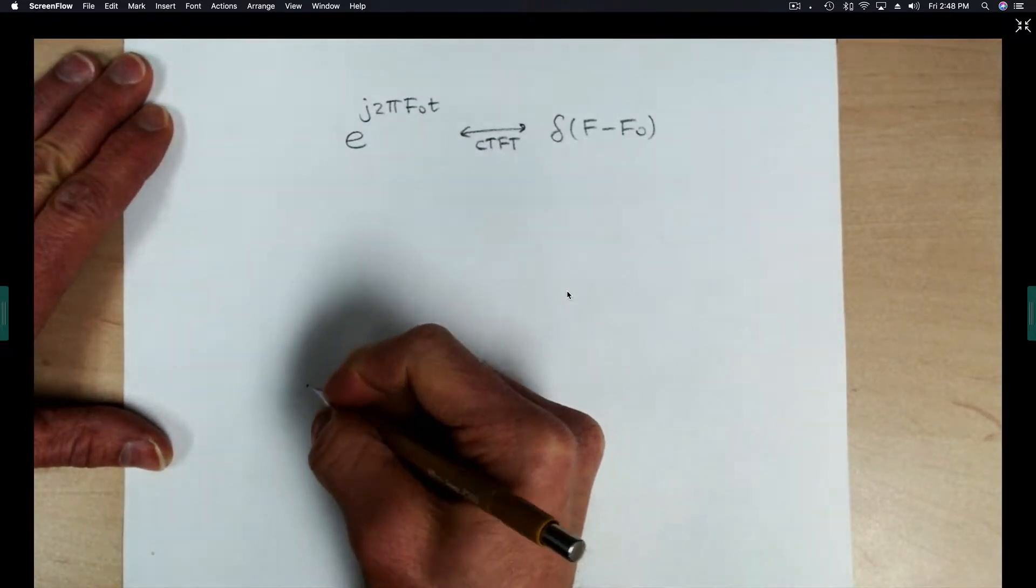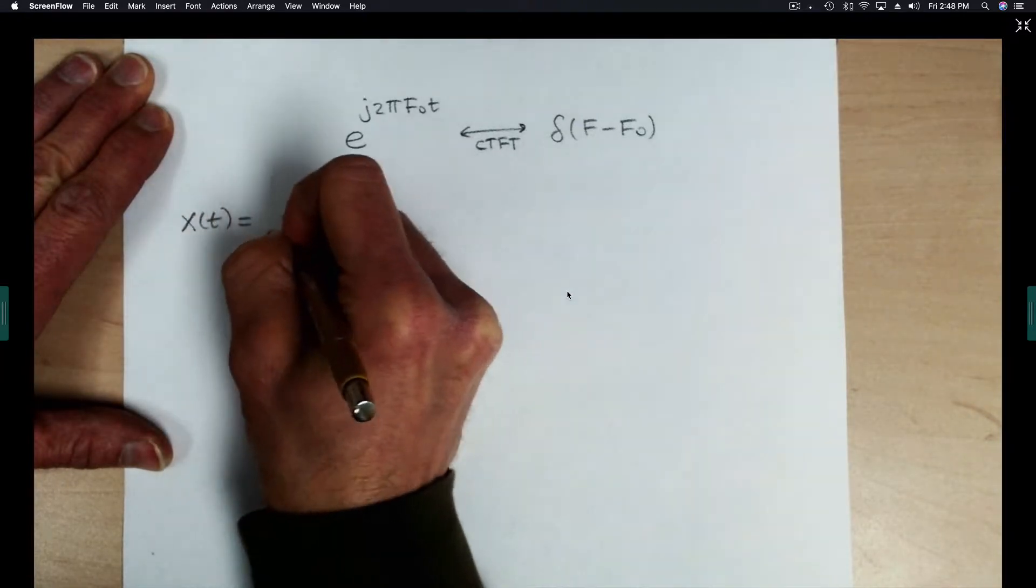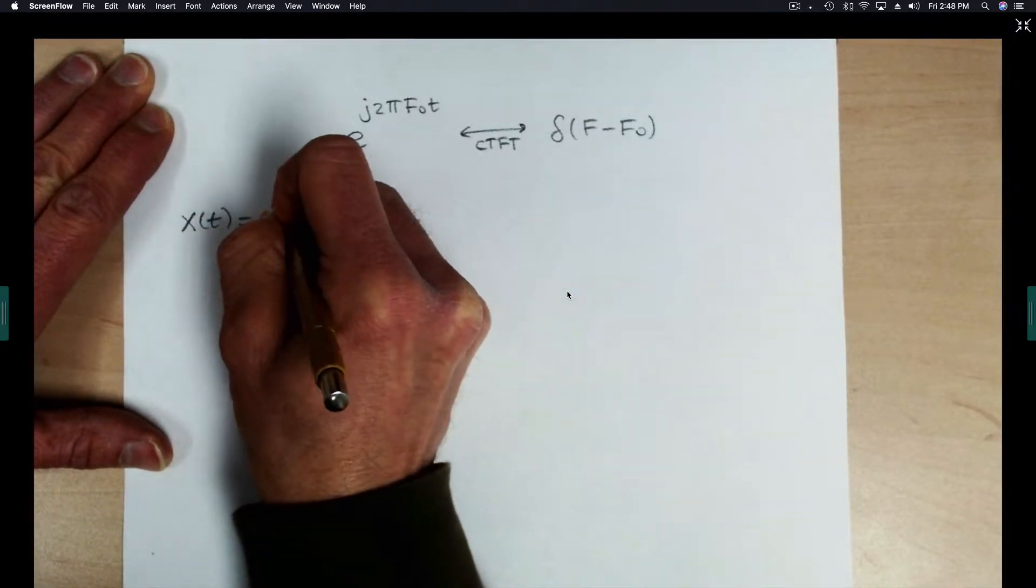Now let's talk about periodic signals. Periodic signals can be expanded in a Fourier series, which has this form.